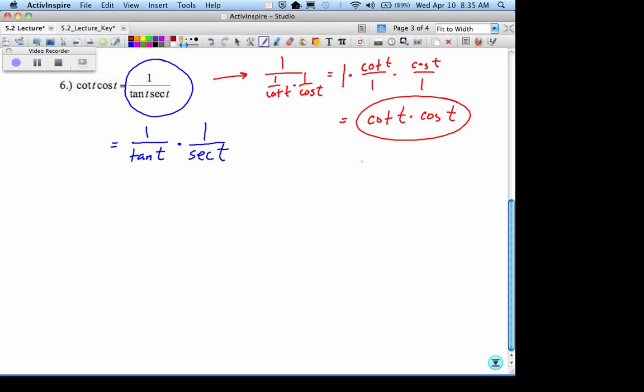And blue, what happens in blue? What I did is I split the bottom into its two factors, I split the top into its two factors, we're still multiplying, but what's 1 over tangent? Cotangent of T times, what's 1 over secant? Cosine of T.